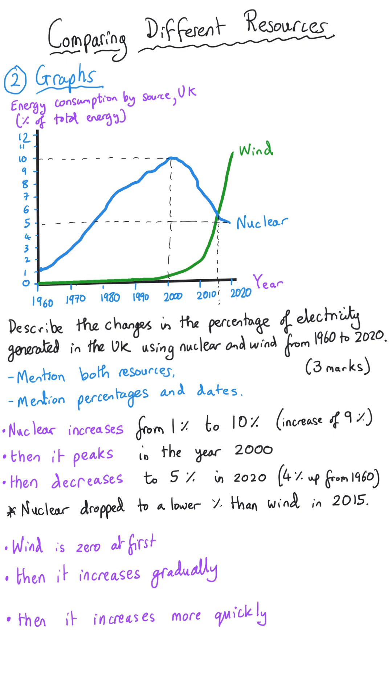And then if we take a look at the wind percentages it was zero percent for quite a long time from 1960 to about 1995. It was zero percent. And then it increased only very very gradually up to something around 2010. And then it increased dramatically after that time.